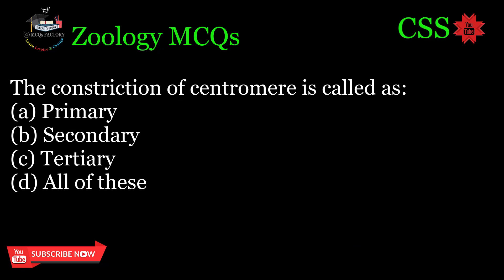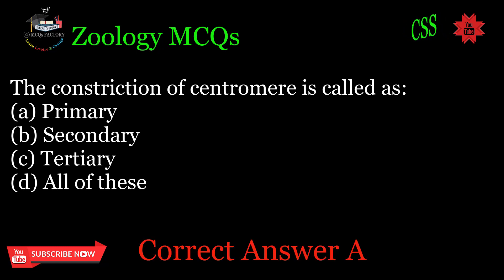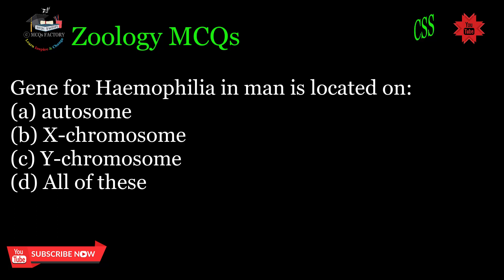The constriction of centromere is called as: A. Primary, B. Secondary, C. Tertiary, D. All of these. Correct answer: A.